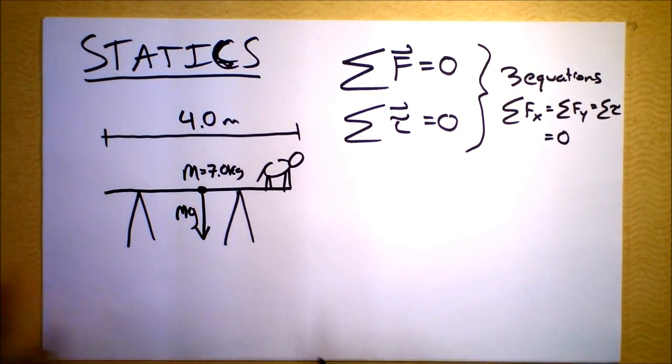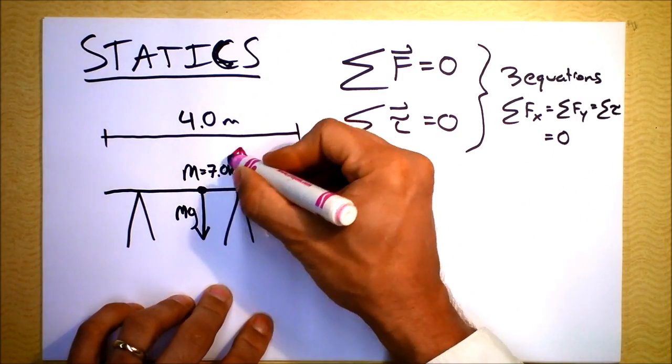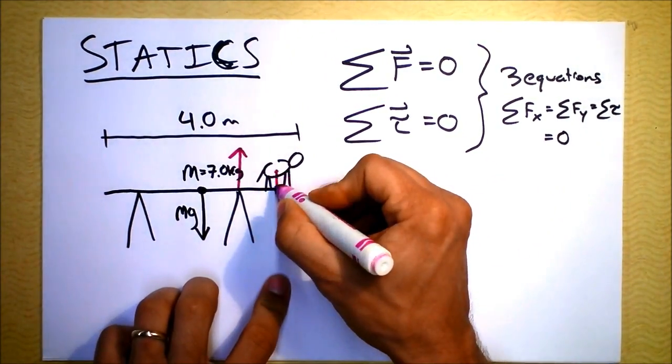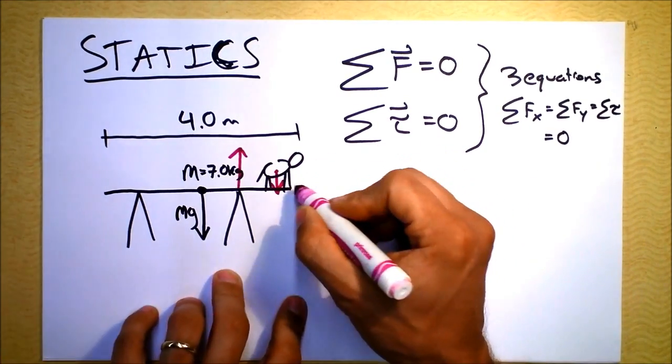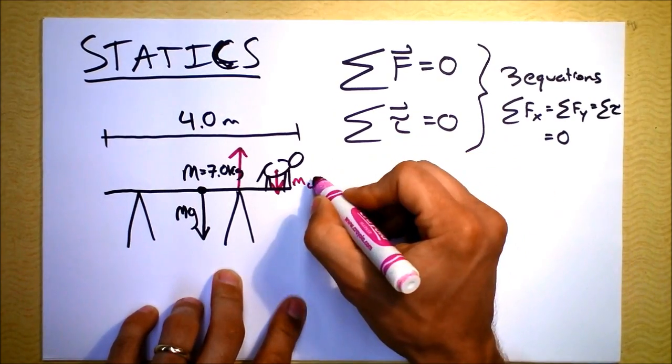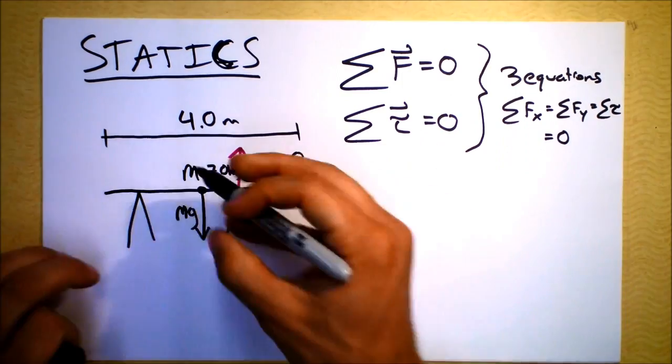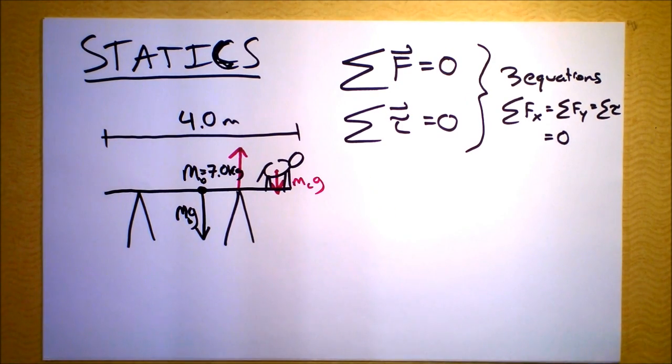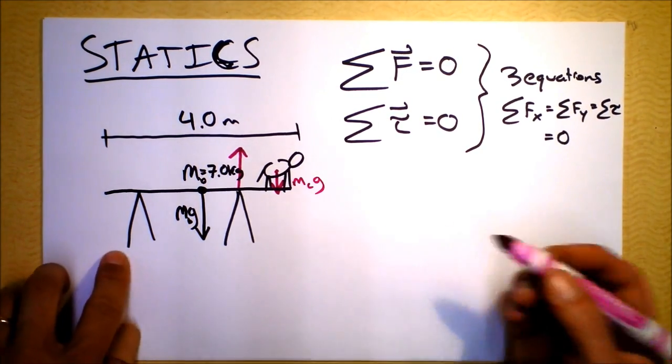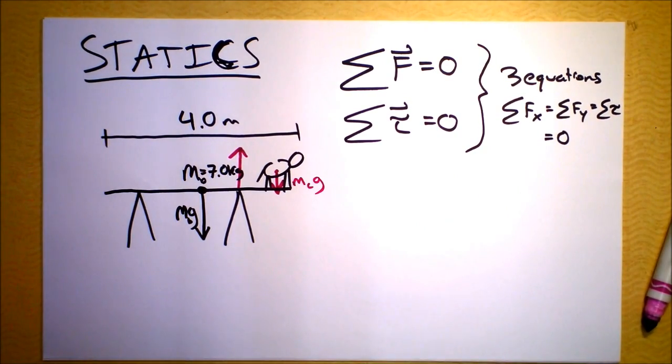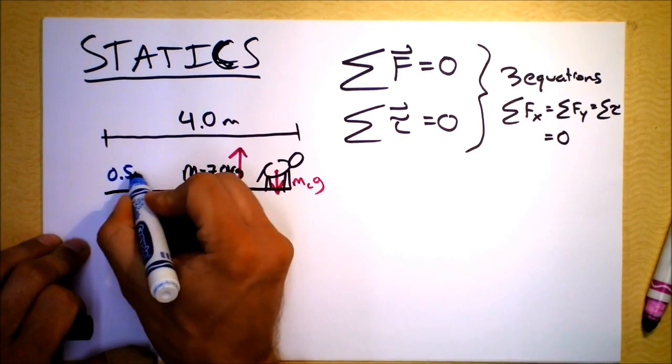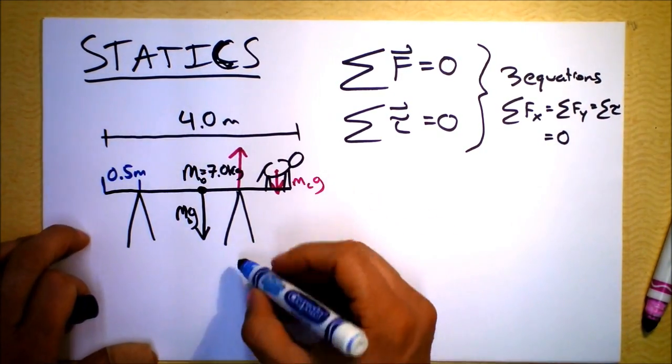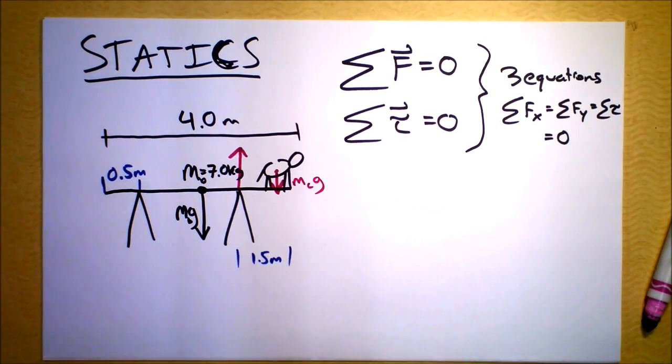There's a force upward here from this sawhorse and there's a force downward from the cat. We've got MC times baby G for that, and this one we can call the mass of the board times the acceleration of gravity. What we are asked is, if one sawhorse is - they're giving us these distances - this is 0.5 meters here, that's where the first sawhorse is located, and the second sawhorse is located 1.5 meters from that end.